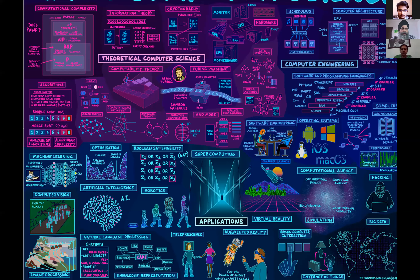Looking at the curriculum, at the top we have Theoretical Computer Science covering computability theory and Turing machines. Then we have Data Structures — one of the most favorite subjects for anyone studying computing. Similarly, we have Software Engineering, Computer Networks, and Database Management System. These four or five subjects are very critical in our program.